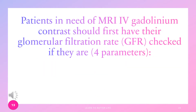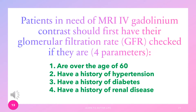Patients in need of MRI with gadolinium contrast should first have their glomerular filtration rate (GFR) checked if they are: 1) over the age of 60; 2) have a history of hypertension; 3) have a history of diabetes; or 4) have a history of renal disease.